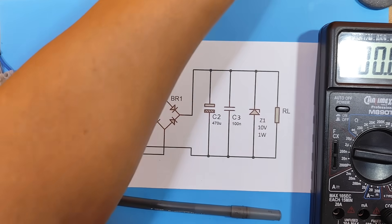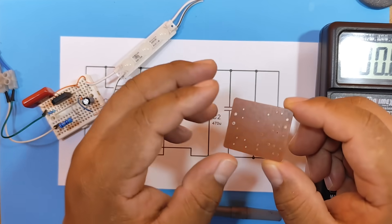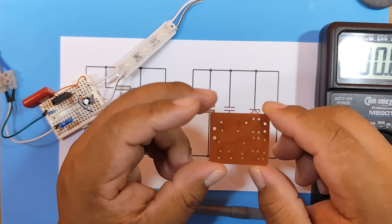Very well. Now what we're going to do is assemble this capacitive source on a board, so we can use it later in other projects.